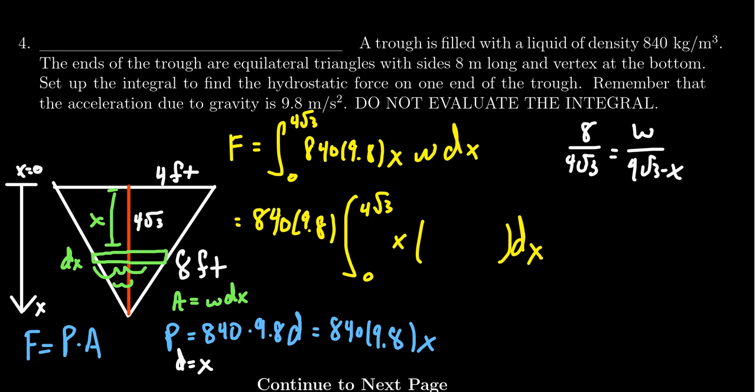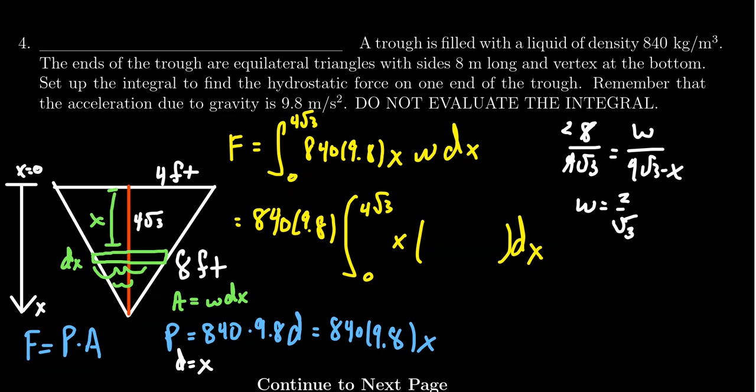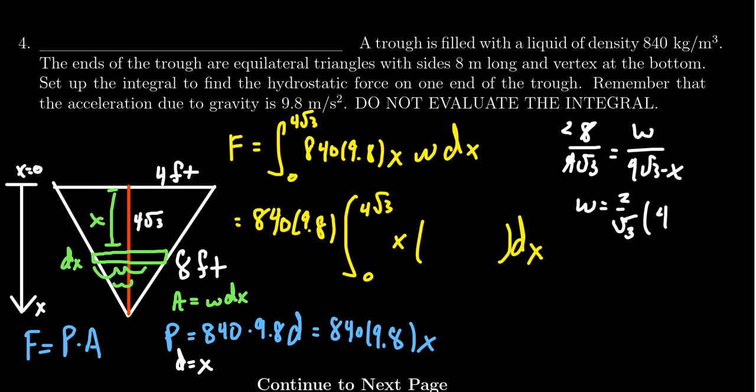So if we solve for w, you'll get w equals, well, 8 over 4 root 3 there, you can cancel. So you get 2 over the square root of 3 times 4 root 3 minus x, like so. We're going to plug that in for w. And so we end up with 2x over the square root of 3 times 4 root 3 minus x, like so.